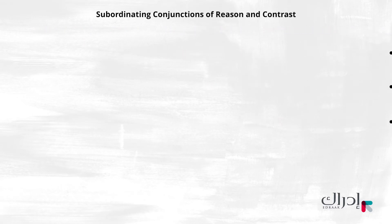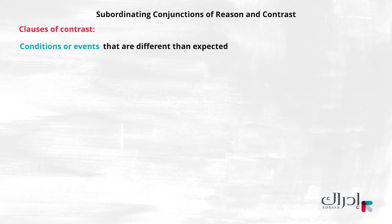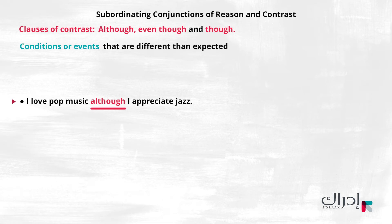Now let's look at another type of subordinating conjunction. Subordinating conjunctions also introduce clauses of contrast. Clauses of contrast introduce conditions or events that are different than expected. The most common subordinating conjunctions to introduce contrast are although, even though, and though. Here are some examples: I love pop music although I appreciate jazz.